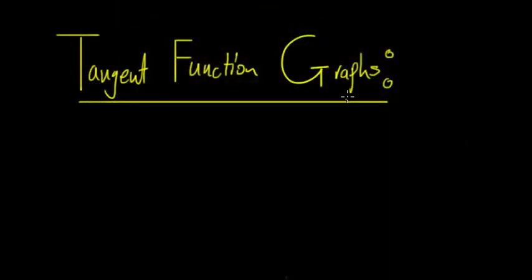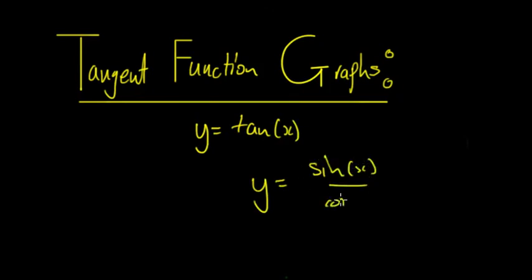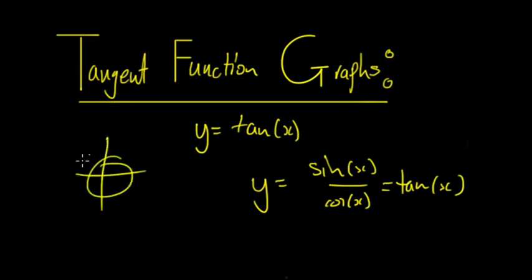In this video we're going to be looking at tangent function graphs, specifically the base form y = tan x, and then we can apply different transformations to change that. We should remember that tan x = sin x / cos x. As tan is a trigonometric function, there are similarities to sin and cos graphs, mainly due to the cyclical nature — it repeats, because of the unit circle.